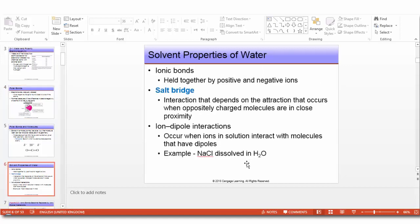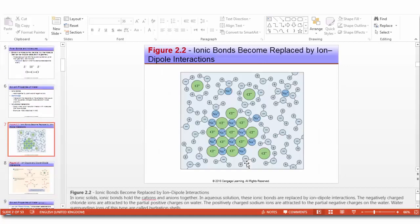Now, what about solvent properties of water? Why do some chemicals dissolve in water while others do not? Let's talk about different types of bonds. Ionic bonds are held together by positive and negative ends. The strongest one is salt bridge interaction that depends on the attraction that occurs when oppositely charged molecules are in close proximity. Ion dipole interactions occur when ions in solution interact with molecules that have dipoles, for example NaCl dissolved in water. This is the picture when a salt like KCl is dissolved in water. In ionic solids, we have cations and anions joined together by this ionic bond.